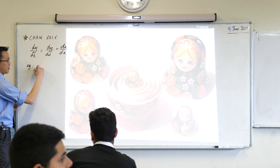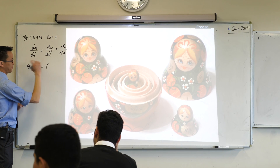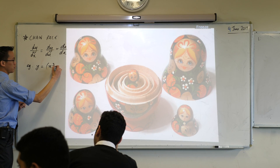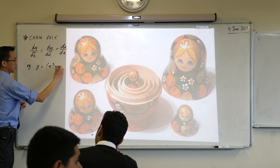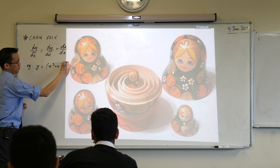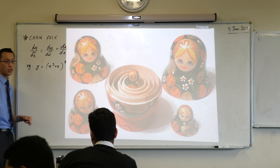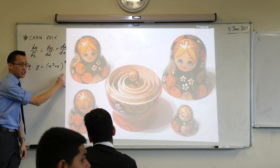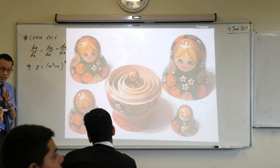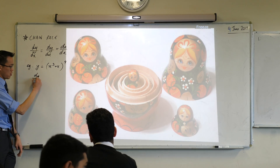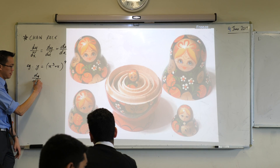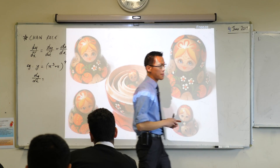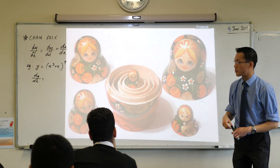Let's consider y equals something like (x³ + x)⁹. We will come to the point where we can differentiate this with the chain rule — find dy/dx — without really having to think hard about formally introducing that substitution.